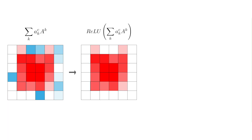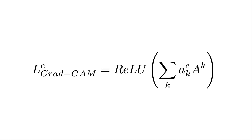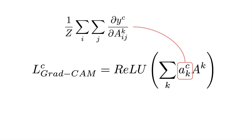This gives us a coarse heatmap. The problem is it will have the same width and height as the feature maps in the convolutional layer. So the last step is to increase the dimensions so they are the same as the input image — this is done by upsampling using interpolation techniques. We can summarize the GradCam heatmap using this equation: it is obtained by applying the ReLU activation function to the weighted sum of the feature maps in the final convolutional layer, where the weight of each feature map is the average gradient of the logit for the predicted class with respect to the elements in the feature map.